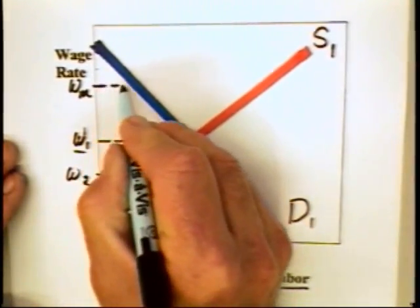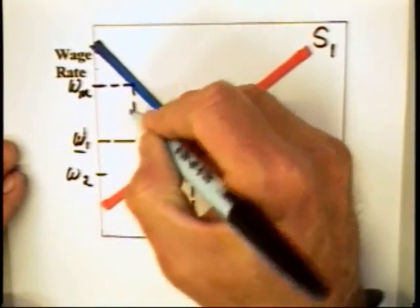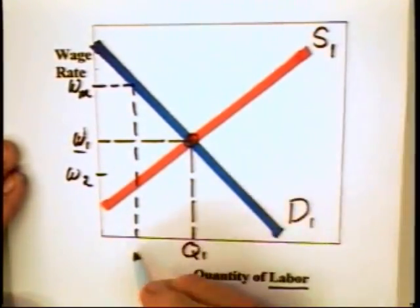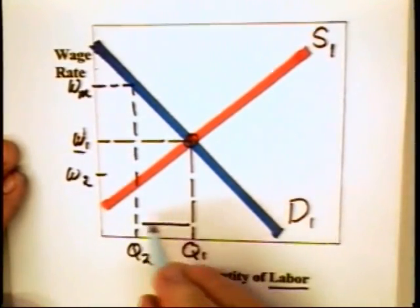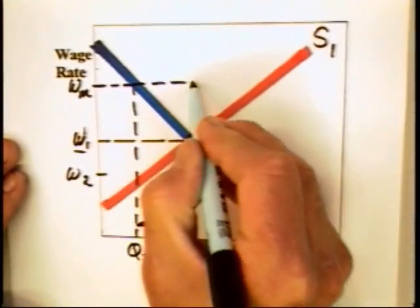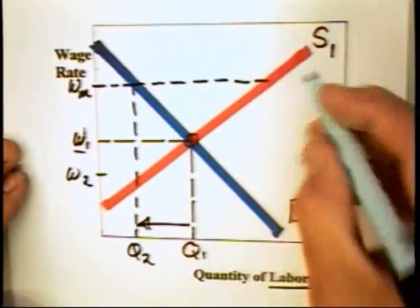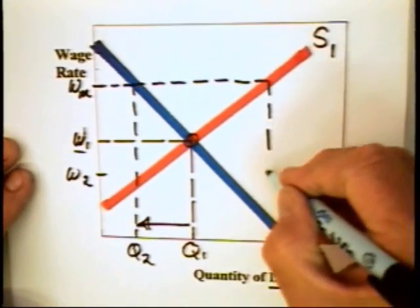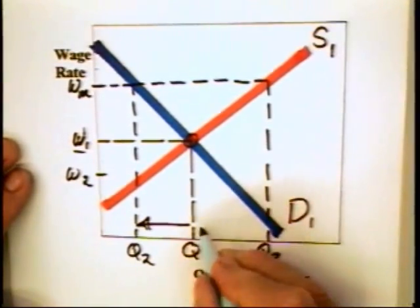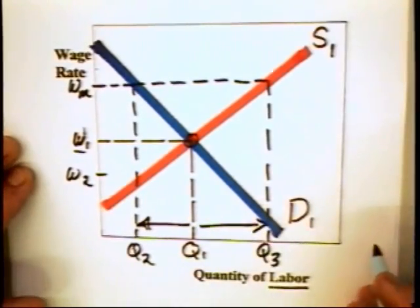At a minimum wage of WM, the standard way of treating minimum wages is to recognize that the quantity of workers who are going to be demanded by employers begins to shrink. On the other hand, the number of workers who want to work at this higher wage rate goes up from Q1 to Q3.